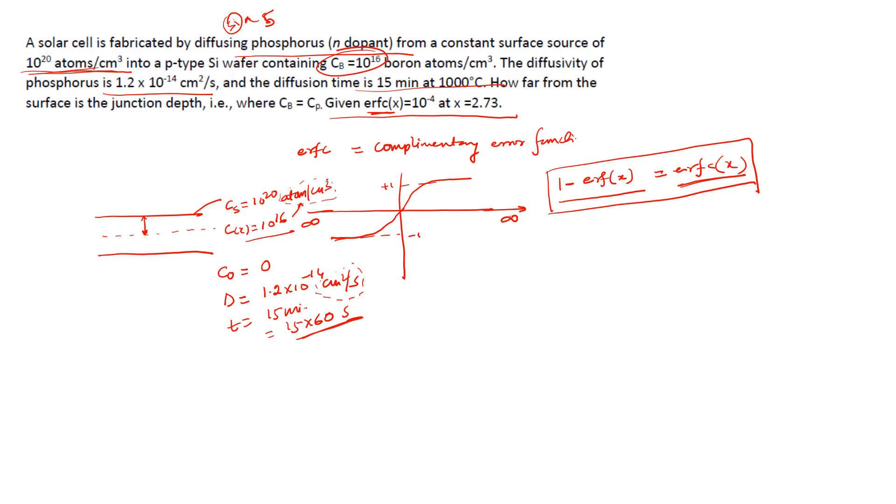We know the formula: (C(x) - C₀)/(Cs - C₀) = 1 - erf(x/(2√Dt)). So here only I have written this 1 minus, so can we write it as erfc(x/(2√Dt))? Yes.